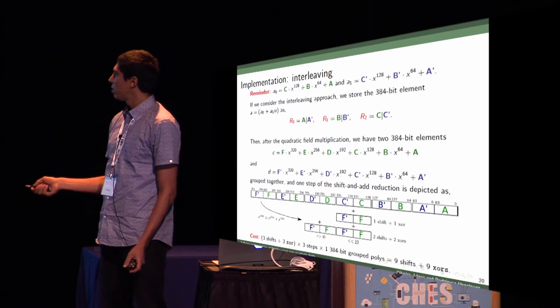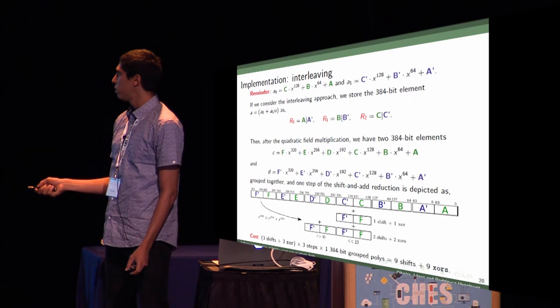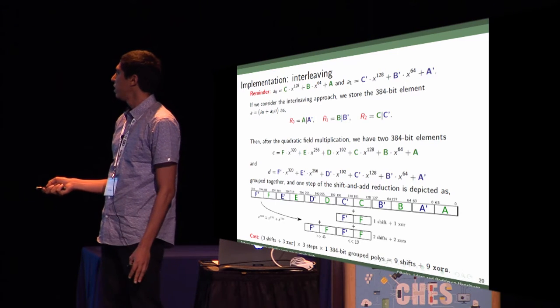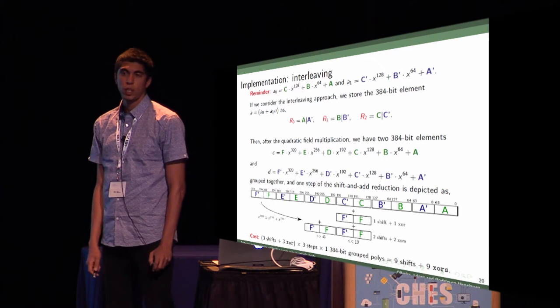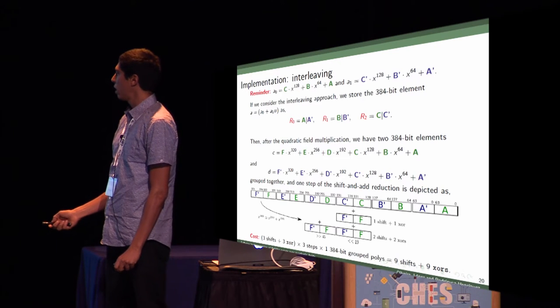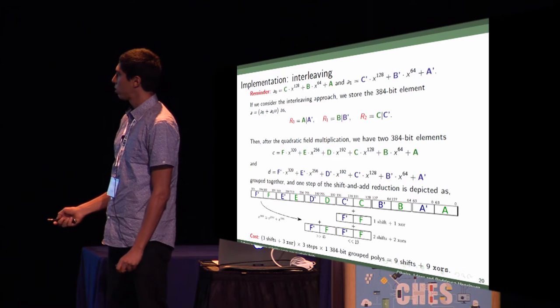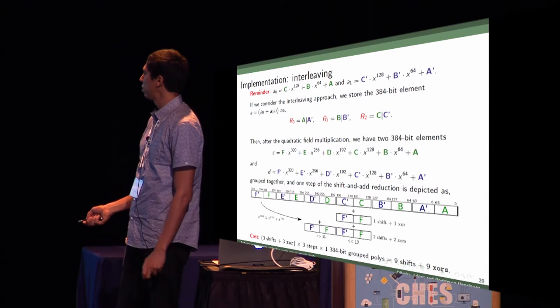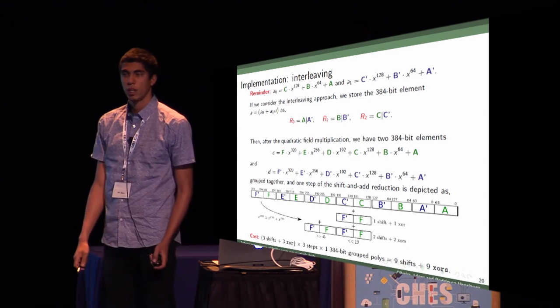Now for the multiplication, we don't have any more shifts between registers, because we are supposing we are dealing with elements of 128-bit size. Now we need three steps to reduce simultaneously two terms of this quadratic field, with only nine shifts and nine XORs.